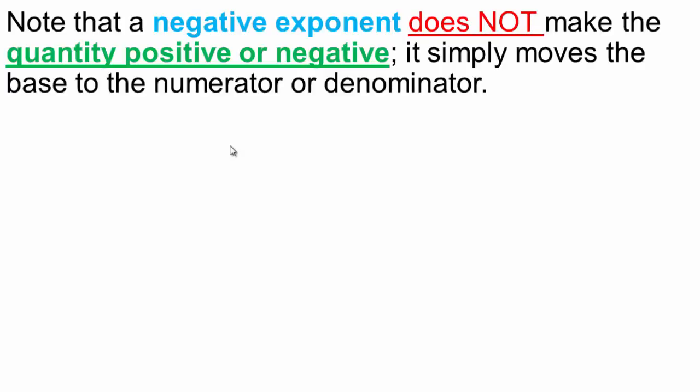In this next part of this lecture, we're going to make sure that you really understand what a negative exponent does. A negative exponent does not make a quantity positive or negative. It simply moves the base to the exponent, makes the exponent positive, and moves the base to the numerator or denominator respectively, depending on where it's sitting.